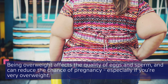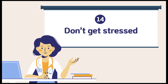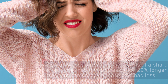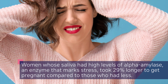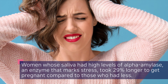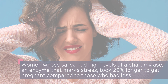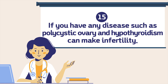Thirteen: obesity — being overweight — affects the quality of eggs and sperm and can reduce the chance of pregnancy, especially if you are very overweight. Fourteen: severe psychological stress can cause infertility. Women whose saliva had high levels of alpha-amylase, an enzyme that marks stress, took 29 percent longer to get pregnant compared to those who had less.